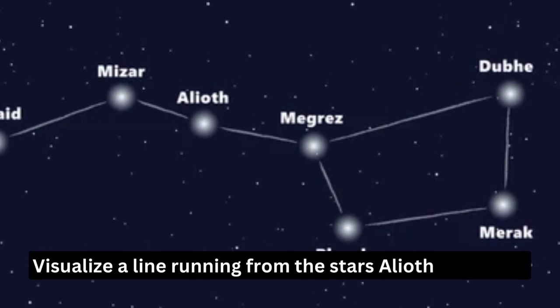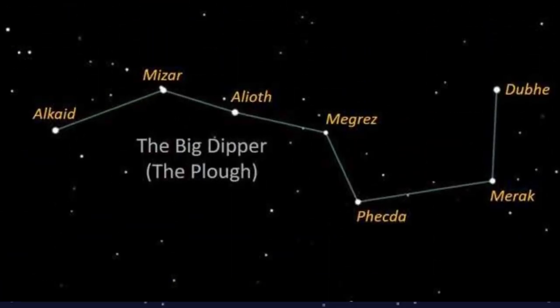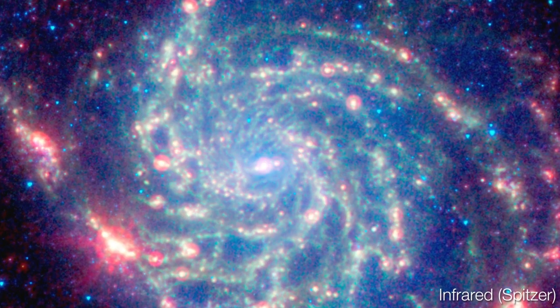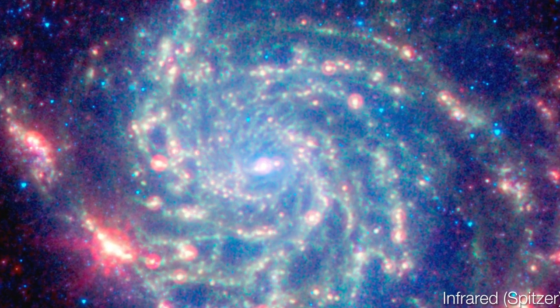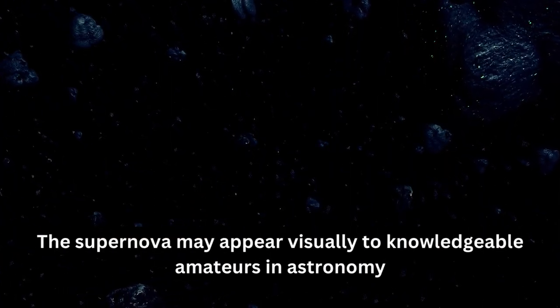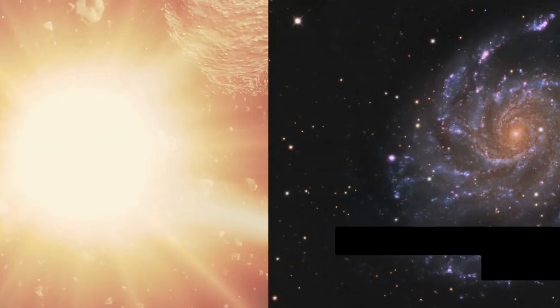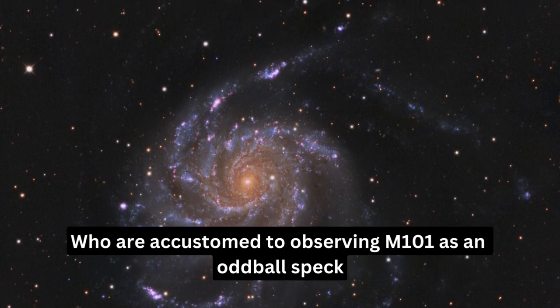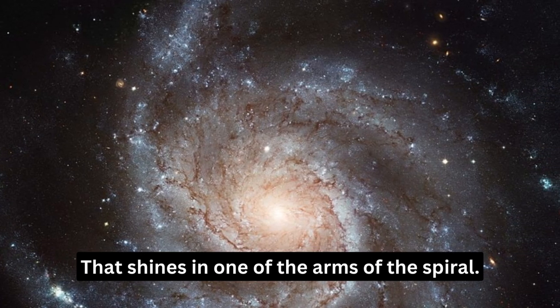Visualize a line running from the stars Alkaid and Mizar in the handle of the Big Dipper if you can find it. Someone will be at the broad region of M101 if they follow that route another equivalent distance past Mizar. The supernova may appear visually to knowledgeable amateur astronomers who are accustomed to observing M101 as a bright speck that shines in one of the spiral arms.